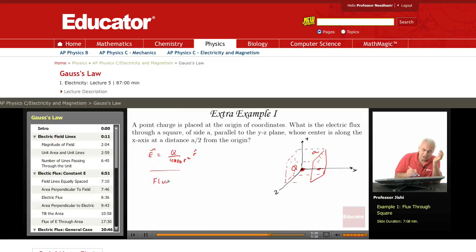So flux through the whole cube is equal to six times the flux through one wall. This is what we want to find, the flux through one wall.